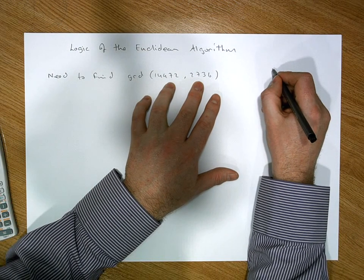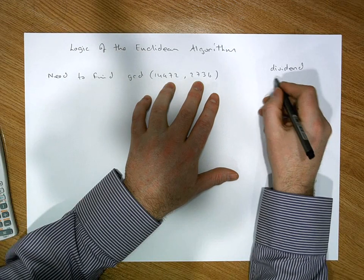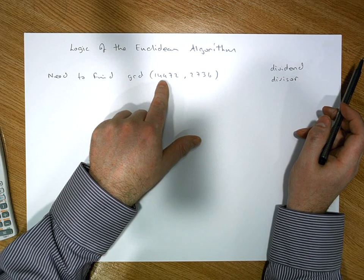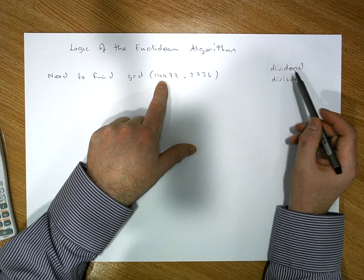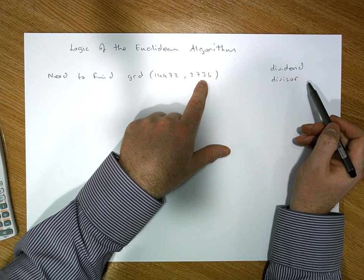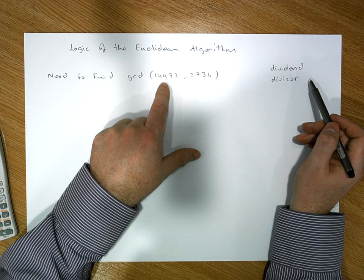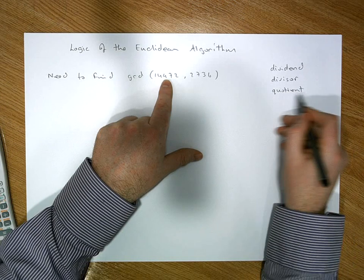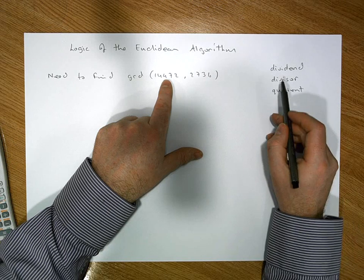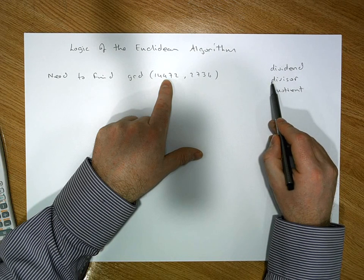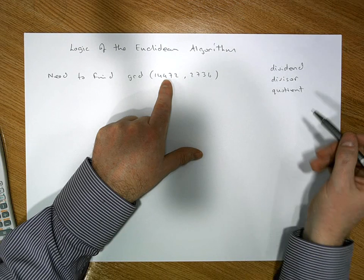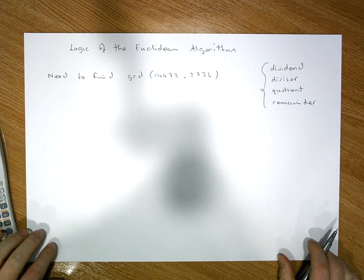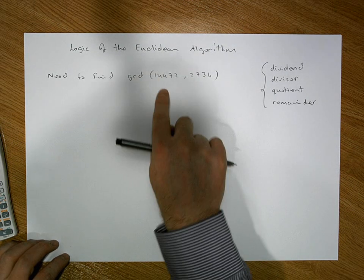The first important word is the dividend. The second is the divisor. When we apply the division algorithm, the question we're asking is: how many times does the smaller number divide into the larger number? The larger number is the dividend, the smaller number is the divisor. The number of times the divisor divides into the dividend is known as the quotient. And after division, we'll be left with some remainder — possibly zero. These are the four important terms we'll use when applying the division algorithm multiple times.